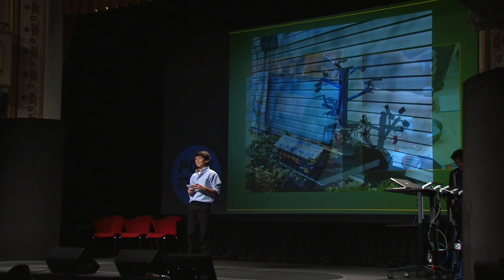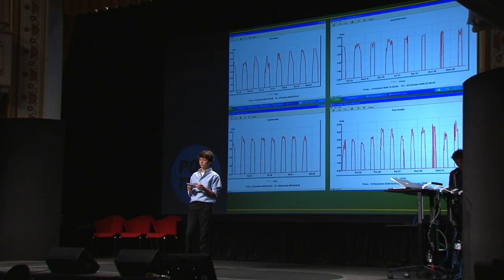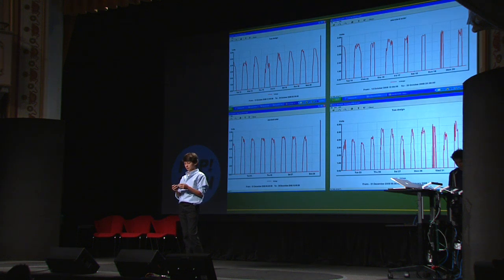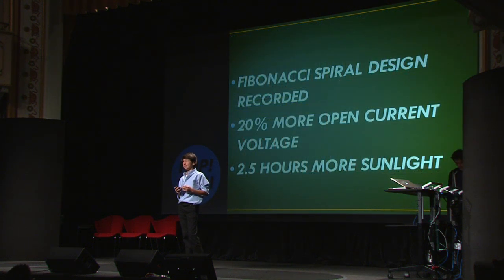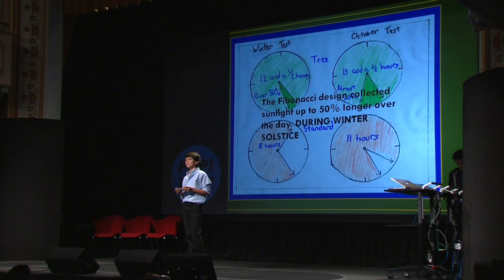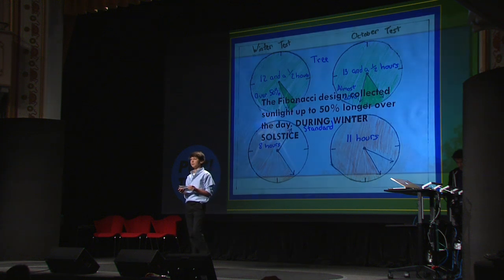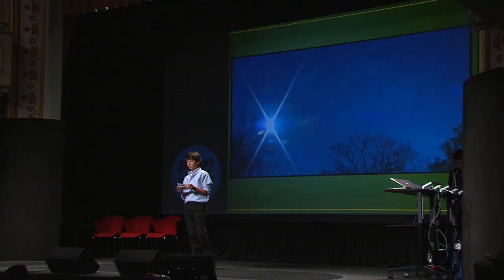The results were really surprising. The Fibonacci design recorded 20% more open current voltage and collected up to 2.5 more hours of sunlight during the day than the flat panel design. The most interesting results were in December at the winter solstice, when the sun was at a low point in the sky — the Fibonacci design collected sunlight up to 50% longer over the day.